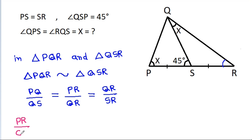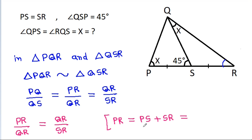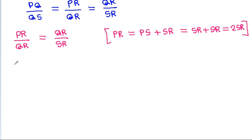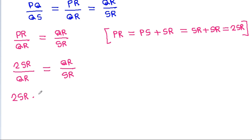We have PR by QR is equal to QR by SR. And PR is equal to PS plus SR. Since PS is equal to SR, we get PR equals SR plus SR, that is 2 times SR. So 2·SR by QR equals QR by SR. Cross multiplying, 2·SR² equals QR², so QR² equals 2·SR².